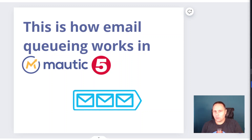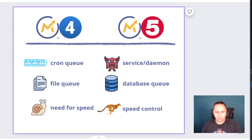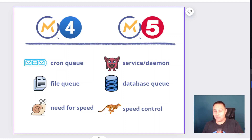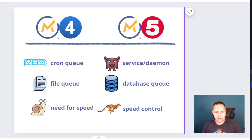So what has changed in comparison to Mautic 4? In Mautic 4 we had a queue that we were managing with cron jobs — there was an email send command which was managing the queue. In Mautic 5 we don't have that. We have a service running in the background, a little daemon, and that's taking care of the emails if we decide to send by queue.